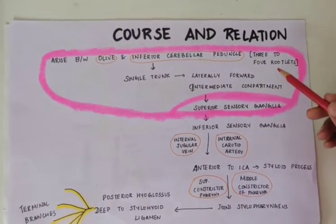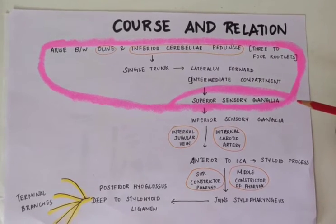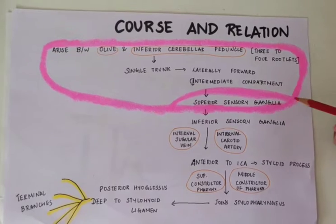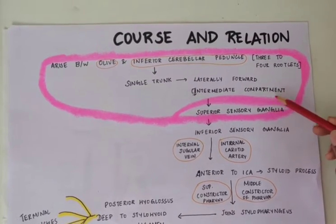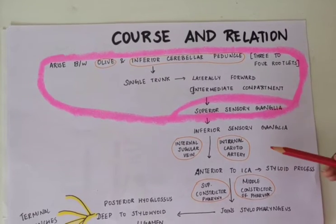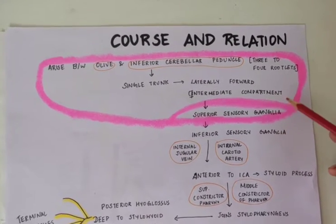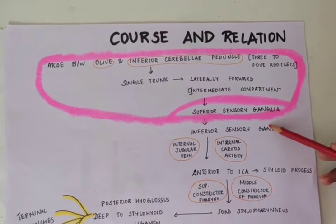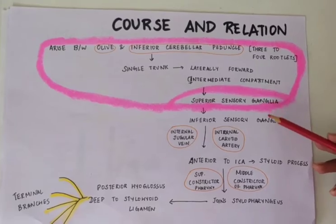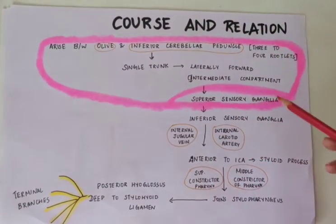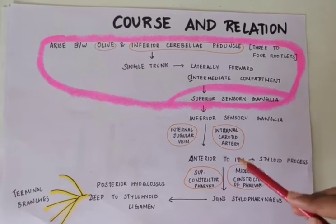The nerve travels laterally and forward through the intermediate compartment of the jugular foramen. In the jugular foramen, there are many structures including the internal carotid artery, the jugular vein, and other nerves. After exiting the jugular foramen, it gives two important ganglia: the superior sensory ganglion, which is smaller and still inside the cranium, and the inferior sensory ganglion, which is larger and located just outside the jugular foramen.